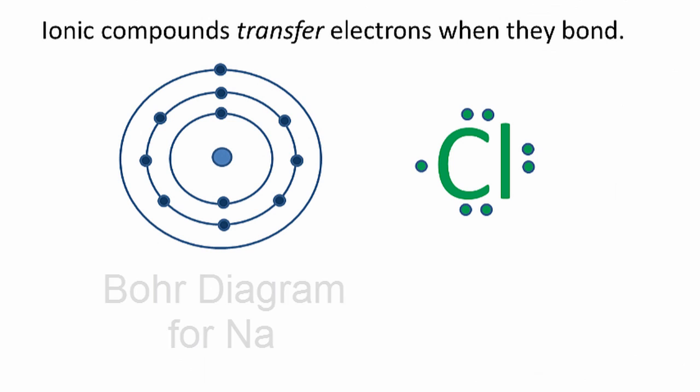Well, we can write a simple Bohr diagram to show the electrons and how they're distributed around the nucleus of the sodium atom. Sodium has 11 electrons, but only one of them is in the outer shell, and that's the one that we transferred to chlorine. When we did that,